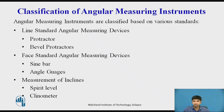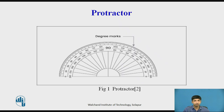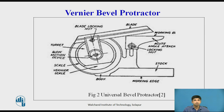In this video lecture we will discuss the Protector, Vernier Bevel Protector, and Optical Bevel Protector. A simple protector is the basic device for measuring angles; at best it can provide a least count of 1 degree for smaller protectors and half a degree for large protectors. The Vernier Bevel Protector is the simplest angle measuring instrument. It consists of a main body, base plate stock, adjustable blade, circular plate containing a Vernier scale, and an acute angle attachment.